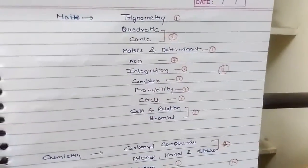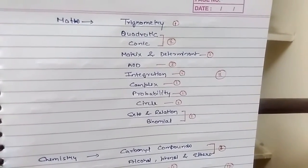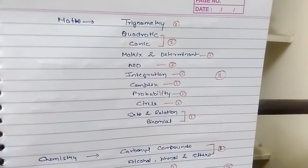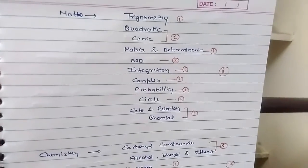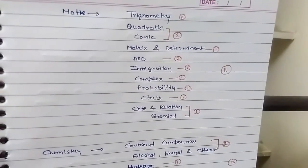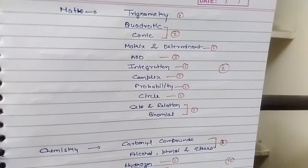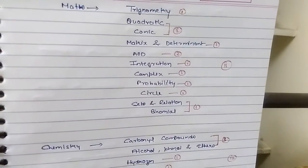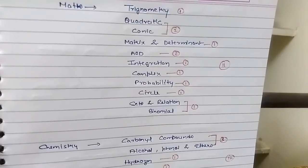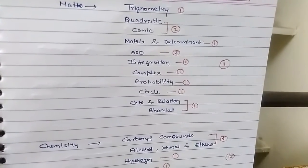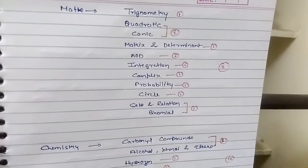Maths: trigonometry 1 question, quadratic conic 2 questions, matrix 1 question, application of derivative 2 questions, integration 1 question, complex probability circle 1 question each, sets and relation and binomial 1 question. Total 11 questions.